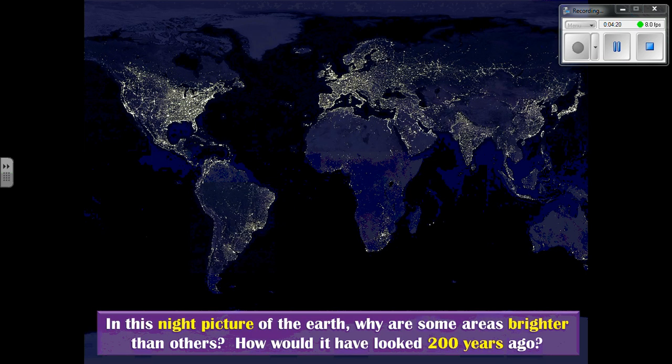In terms of this next image — this is a night satellite image of Earth. Why are some areas brighter than others? That's probably fairly obvious. But also consider: how would it have looked 200 years ago?